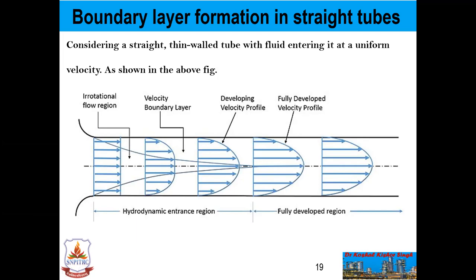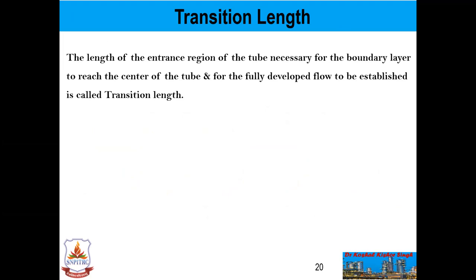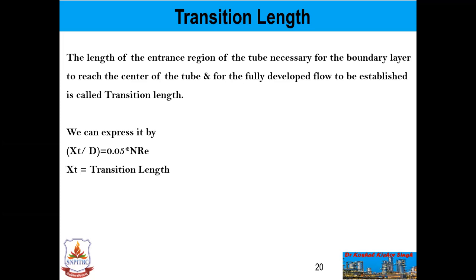Now we will discuss the transition length. The length of the entrance region of the tube necessary for the boundary layer to reach the center of the tube and for fully developed flow to be established is called transition length. It can be expressed as: x_t / D = 0.05 × N_Re, where x_t is the transition length and D is the diameter of the tube.